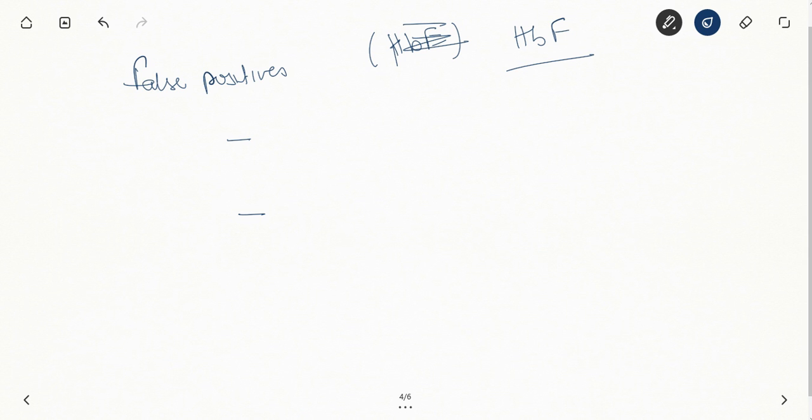Which are these? Beta thalassemia and sickle cell disease. So these are the conditions where you can have a false positive apt or ogita or Kleihauer-Betke test.